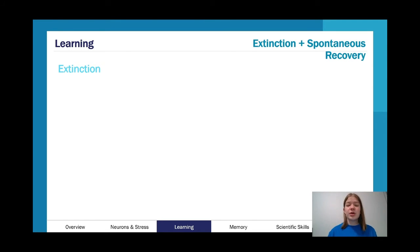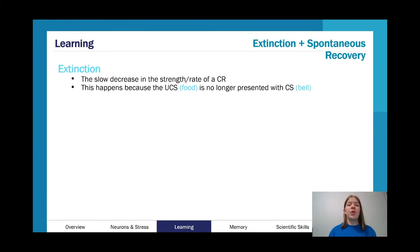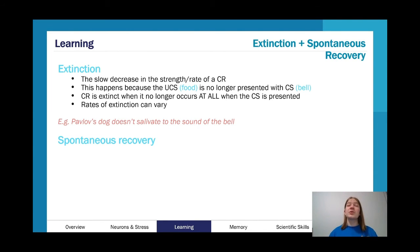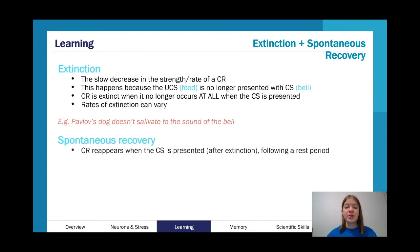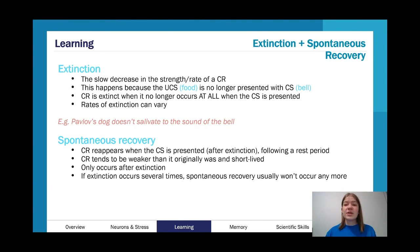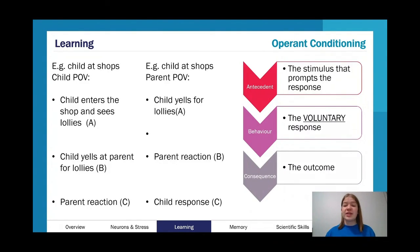We can also look at extinction, where we see a decrease in the strength of the response. We're no longer having that association — it becomes weaker and weaker until the conditioned response doesn't occur at all in response to the conditioned stimulus. We can also have spontaneous recovery: after extinction is thought to have occurred, there's a rest period, and then you present the conditioned stimulus again and the conditioned response reappears. It tends to be weaker and faster to extinguish, and eventually you don't get any spontaneous recovery anymore.